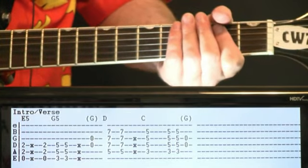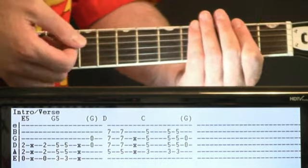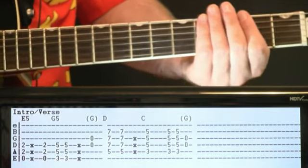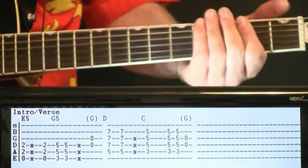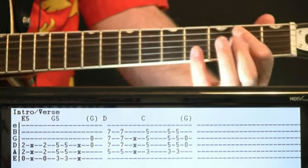All right, so after we hit our open E power chord, then we just kind of hit this dead strings. Okay, this real percussive kind of strumming vibe we got going on here. Come back to the open low E.